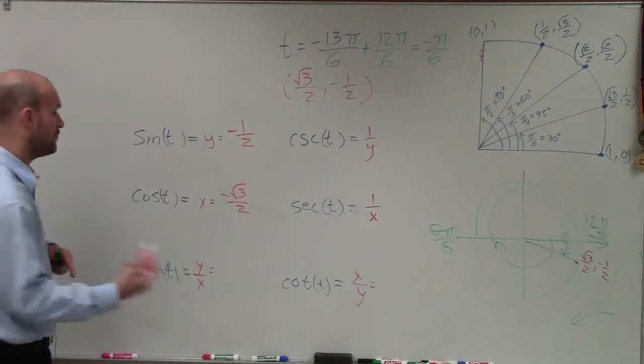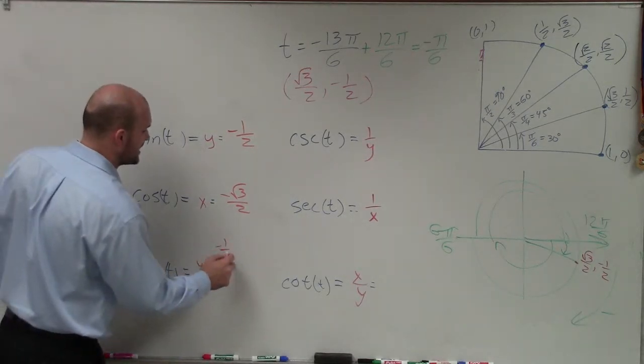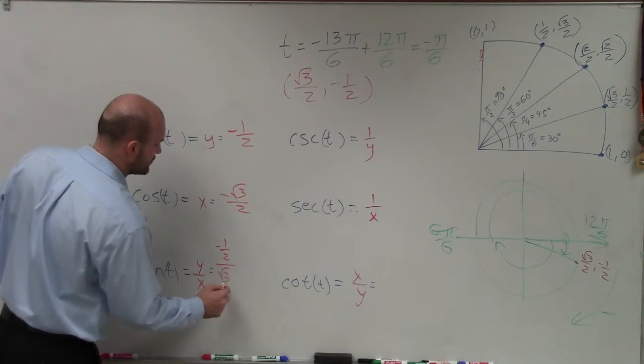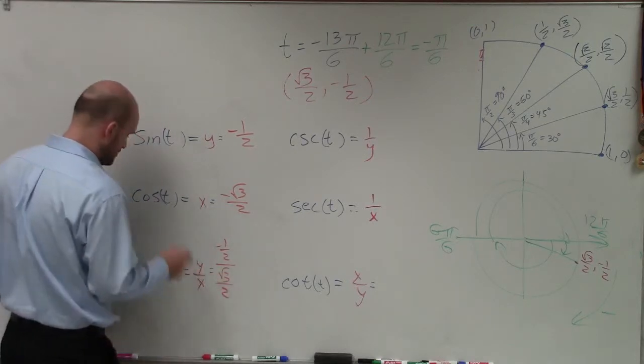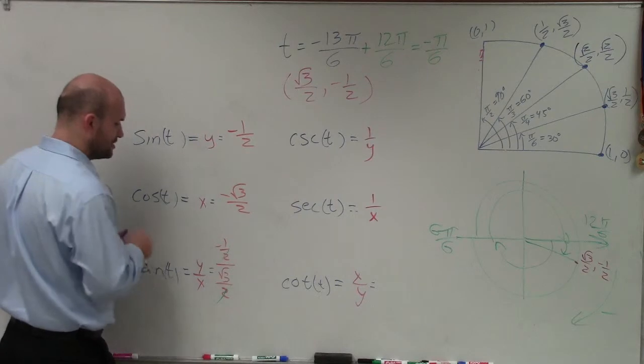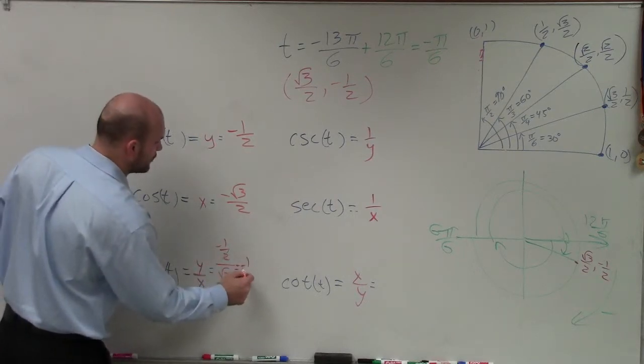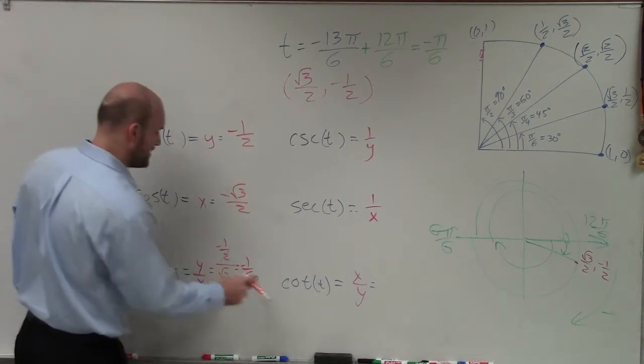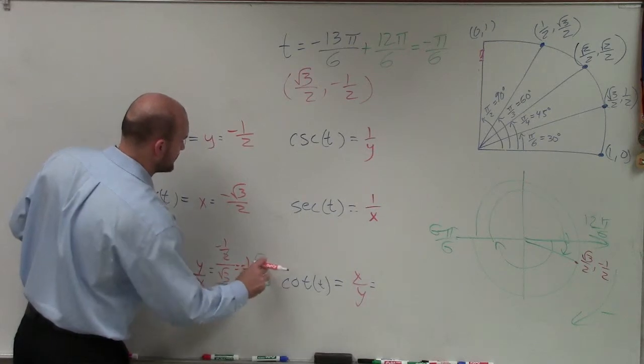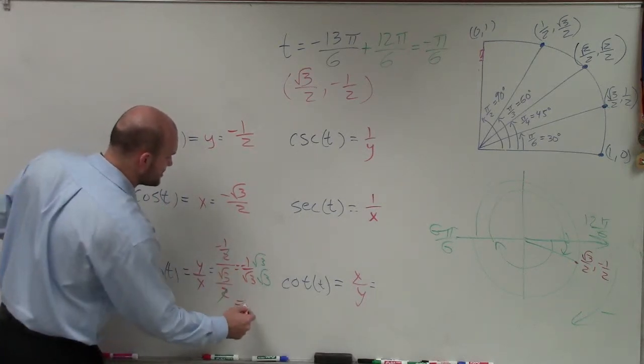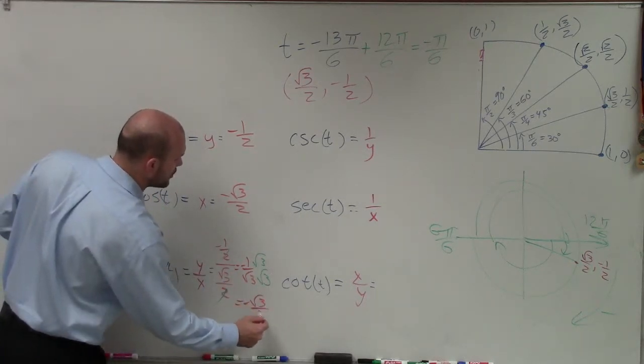The tangent represents the y over the x. So that's going to be a negative 1 half divided by square root of 3 over 2. To kind of keep this a little bit simple, we can divide out those 2's. So I'm just left with a negative 1 over the square root of 3. Again, we have to rationalize the denominator. So therefore, my final answer is going to be a negative square root of 3 over 3.